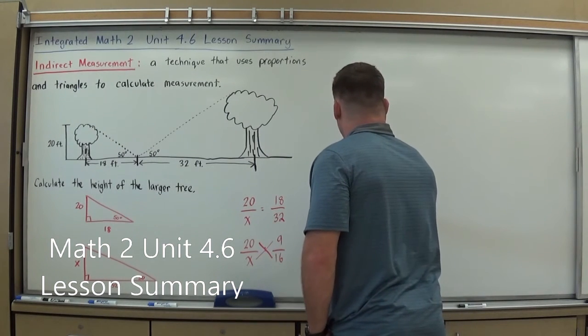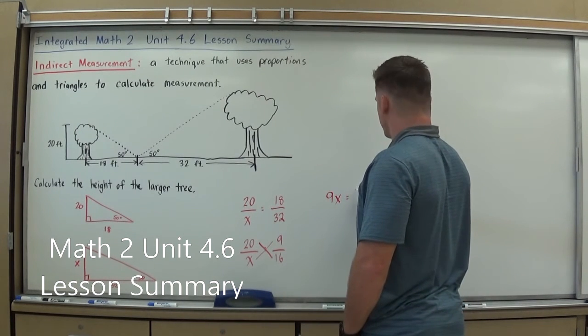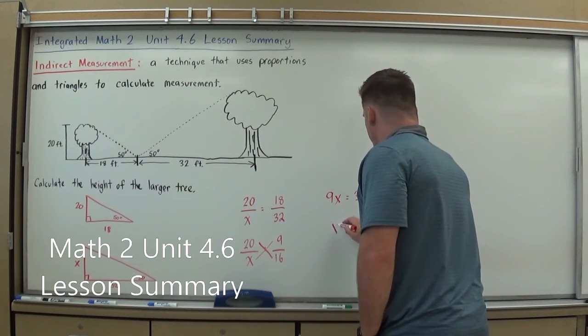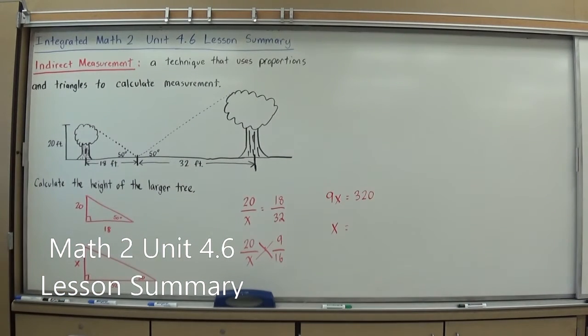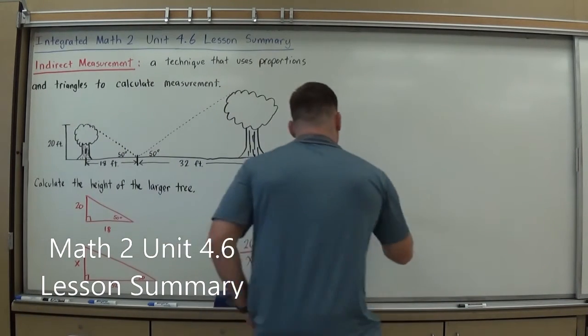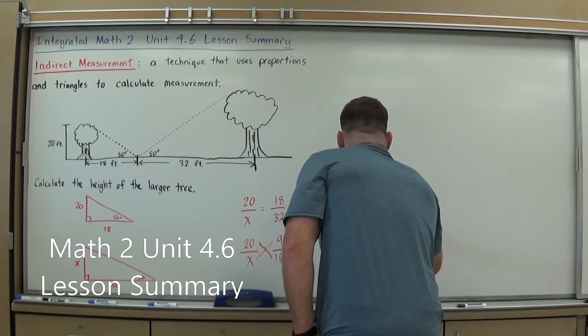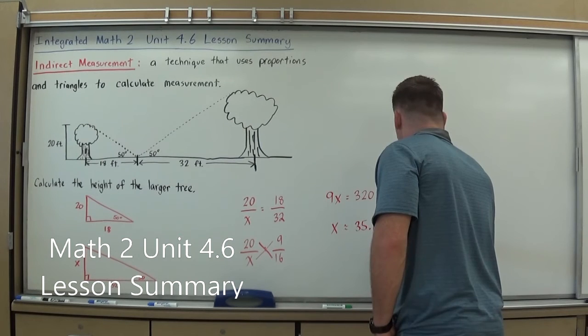9 times X is 9X. 20 times 16 is, or 2 times 16 is 32, add a 0 is 320. I'm going to divide both sides by 9, and that should give me the total. I'm going to do 320 divided by 9. I'm going to calculate it real quick, speed it up, although I could do long division. 35.5 repeating, so I'm going to just approximate that to 35.6. And we're talking about feet, so I'll put feet.